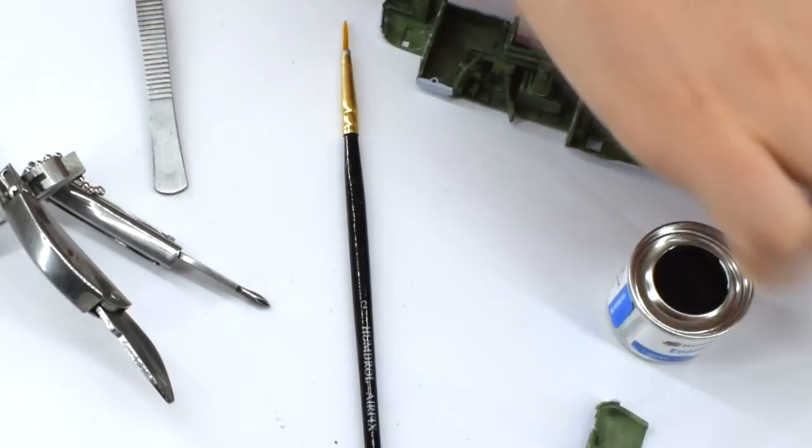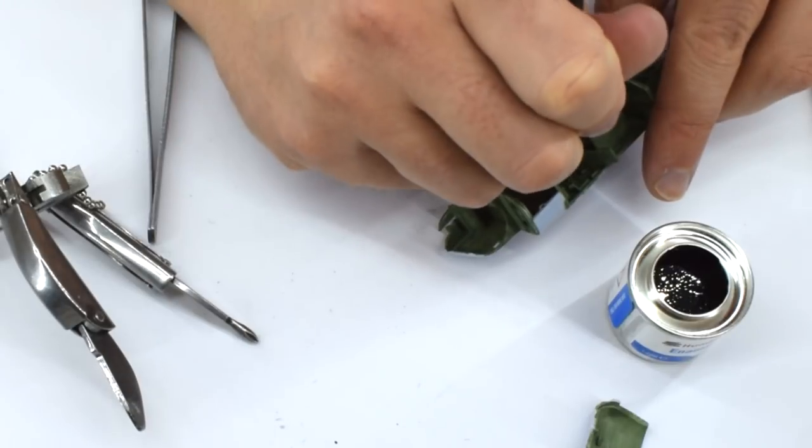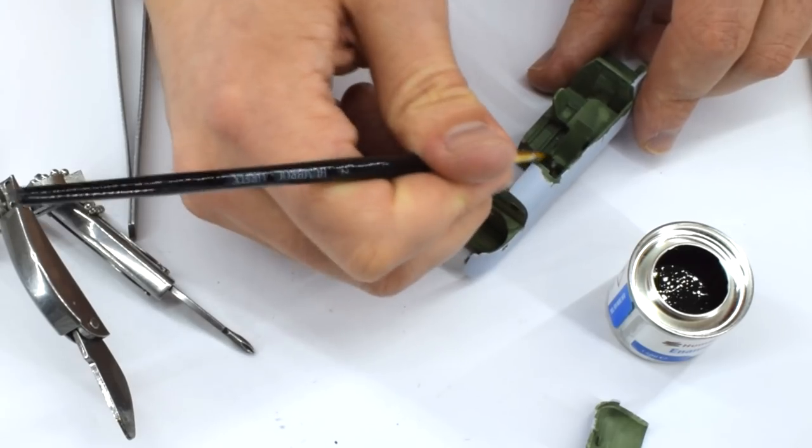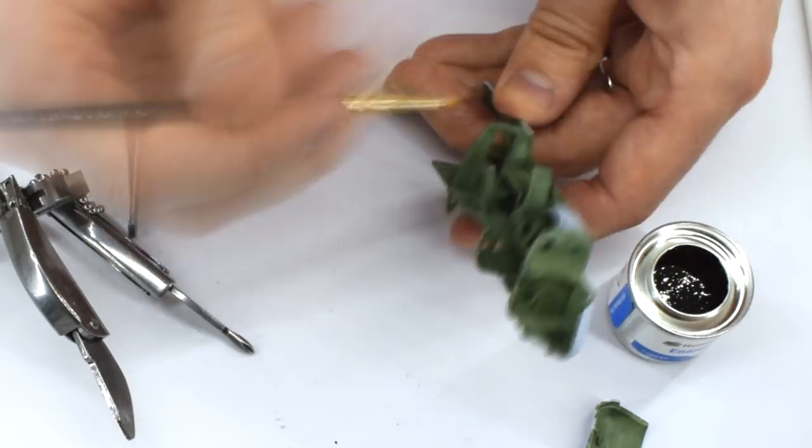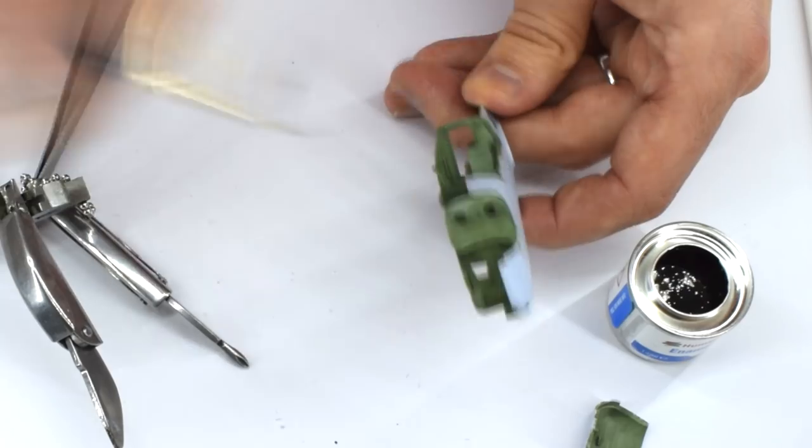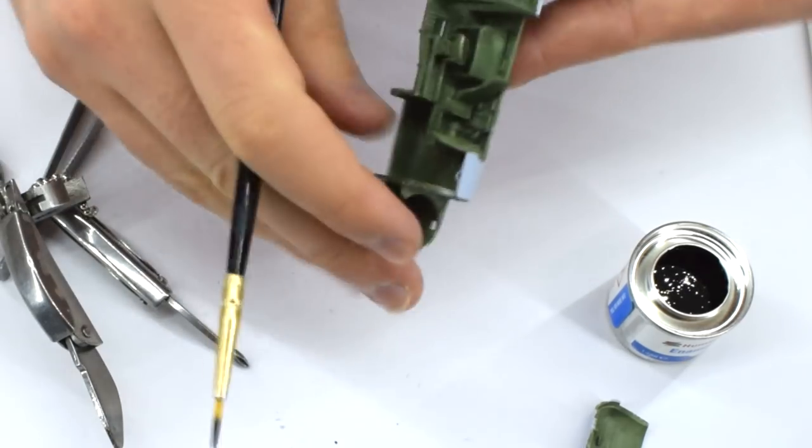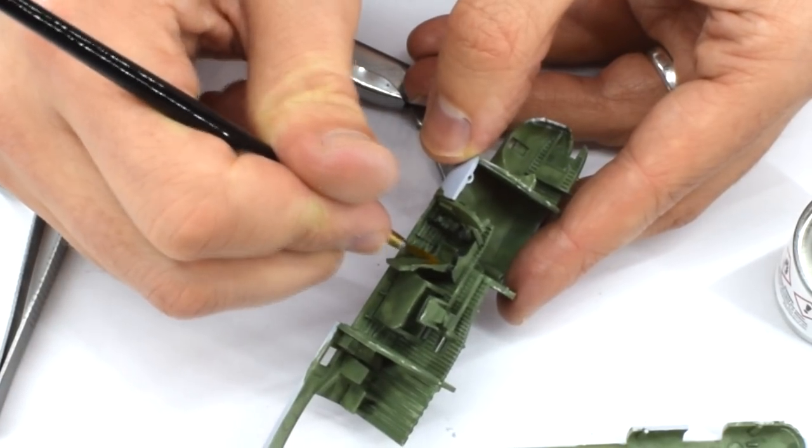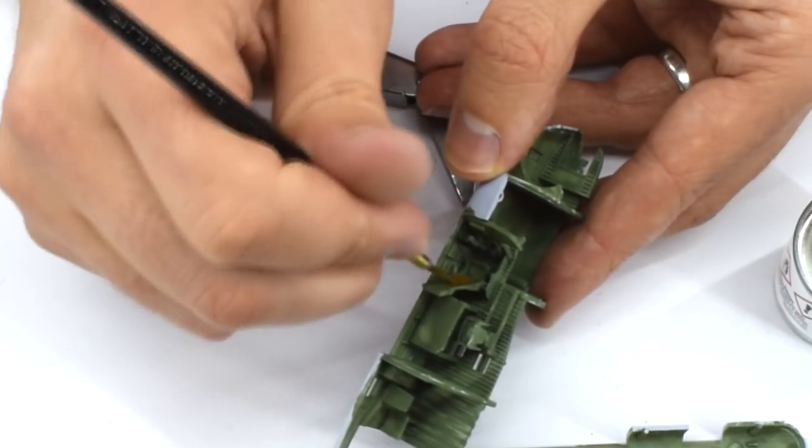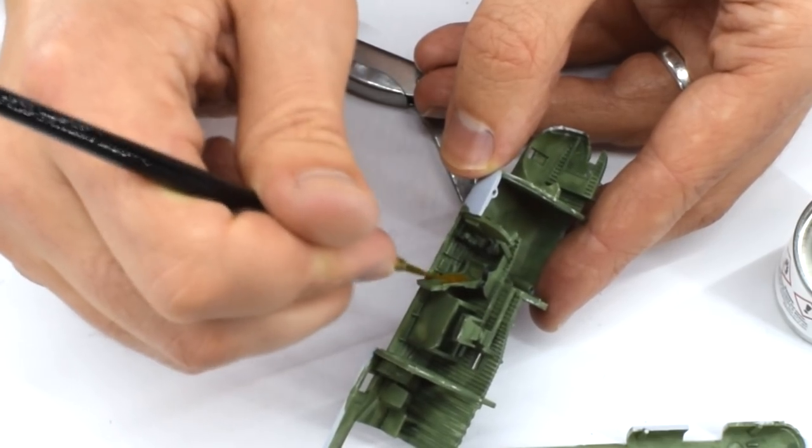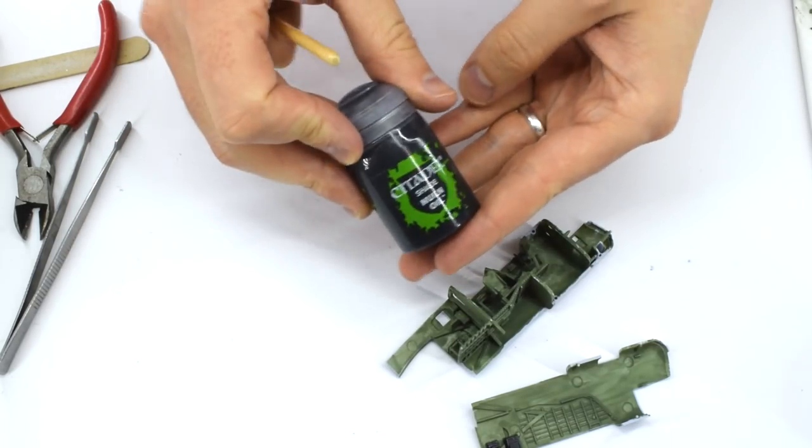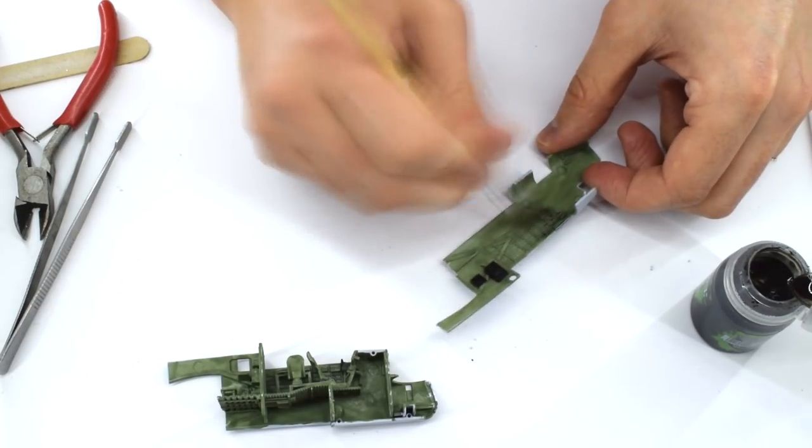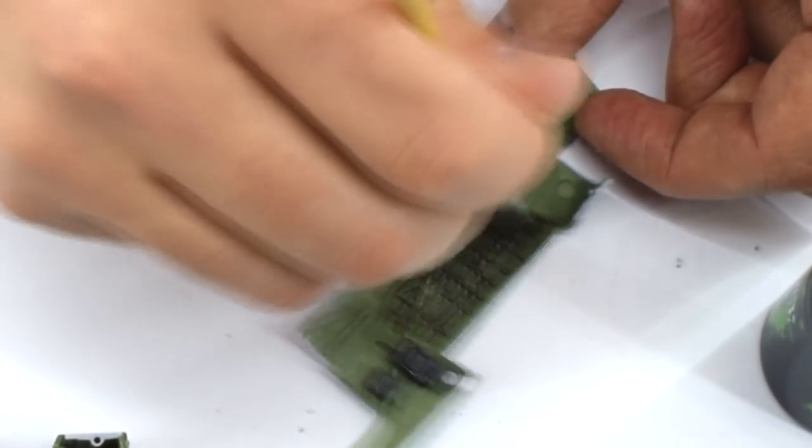With this paint now dry, Humbrol Satin Black enamel number 85 was then used to pick out the internal details such as the control column and other items as indicated by the instructions. I used a fine brush to do this, in an attempt to avoid placing it in the wrong location. Humbrol 62 matte leather enamel was used straight out of the tin to highlight the backrest of the pilot's seat. With all the cockpit paint now dry, Citadel Nun Oil acrylic black wash was used to highlight the details and create contrast between the raised and recessed details.